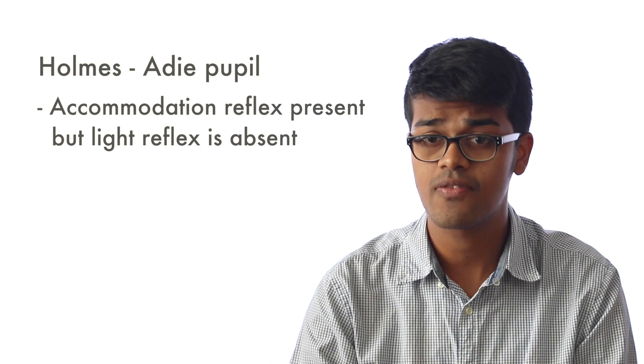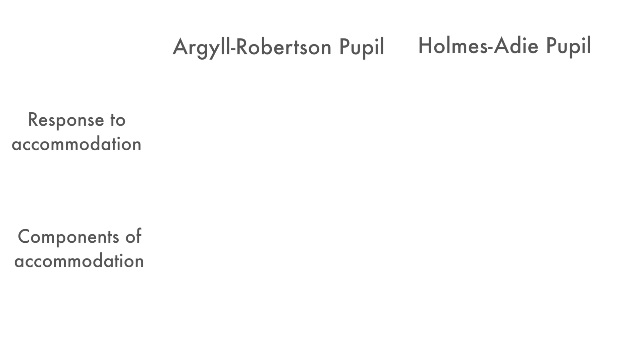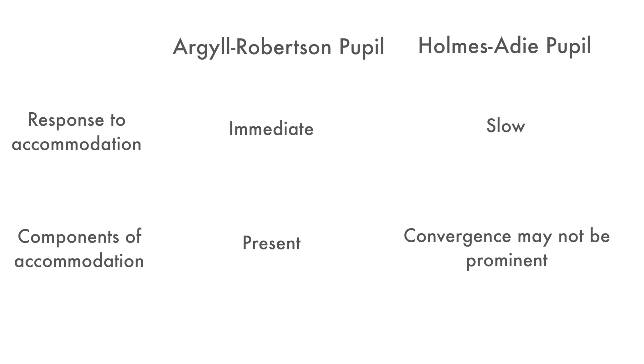There may also be associated generalized areflexia and autonomic dysfunction. The Argyll Robertson pupil and the Holmes Adie pupil can be distinguished clinically by the response to accommodation. In Argyll Robertson pupil, the response to accommodation is swift and immediate, and all components of accommodation are present. In Holmes Adie pupil, the response to accommodation is slow and prolonged, and convergence of the eyeball may not be prominent due to weakness of the muscles involved. Thank you for watching.